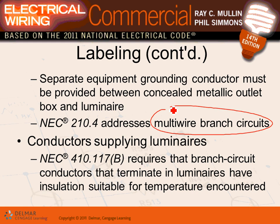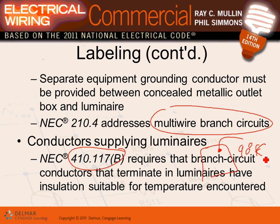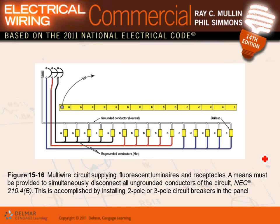Suitable for temperature encountered: branch circuit conductors that terminate in a luminaire must be rated for 90 degrees Celsius or higher, because inside the fixture it gets very hot. You can't use 75-degree rated conductors — you have to be rated for 90 degrees or for the temperature encountered.